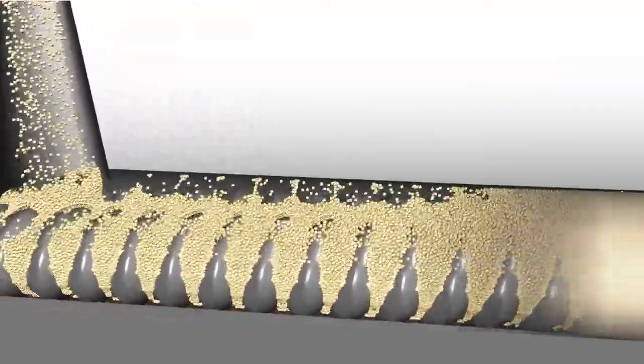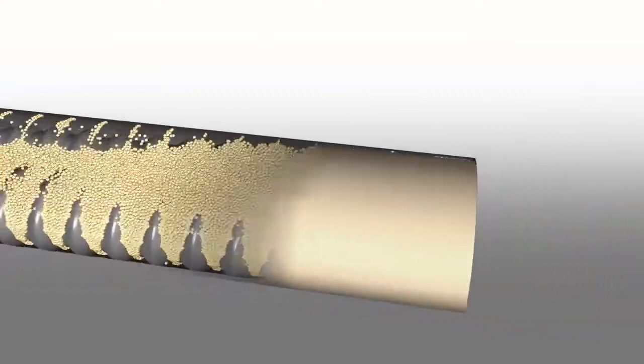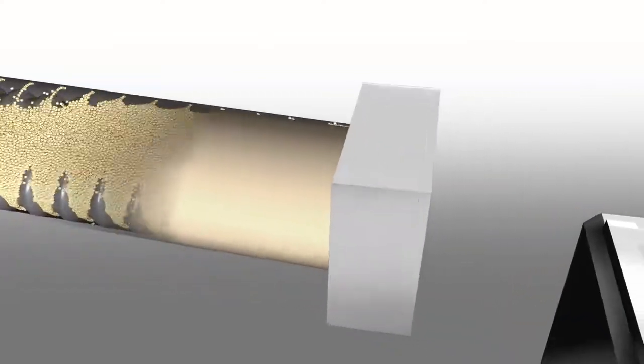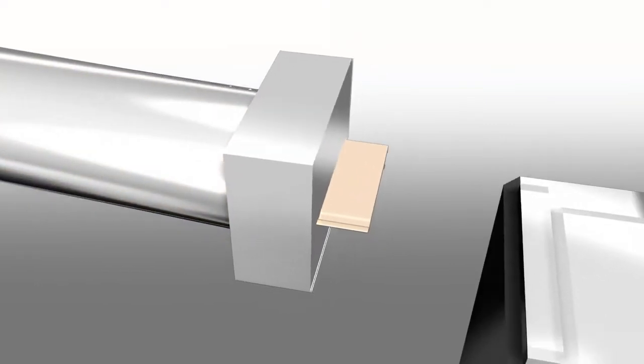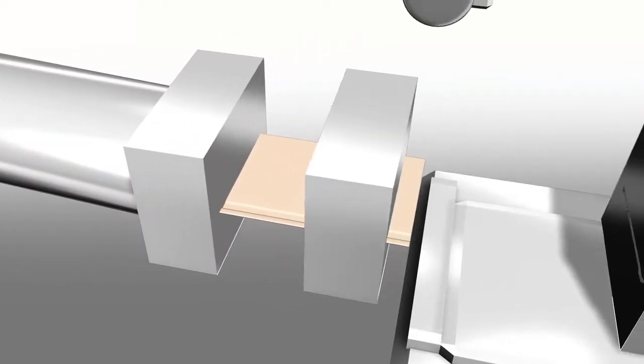The revolving action of the dual screws pushes the melted compound into the die, starting the process of converting the material into a profile. Once the material flows through the first metal die plate, it starts to take on its initial shape.